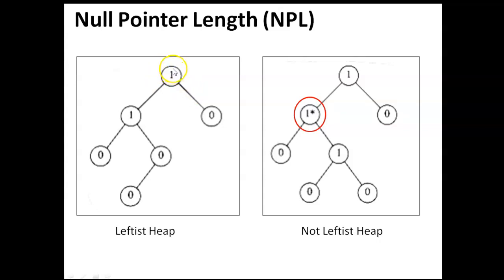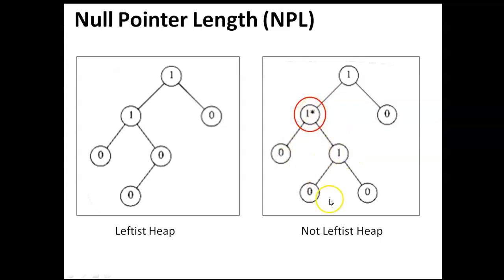How do we say it is a leftist heap? We have to check whether the left subtree of each node has a greater or equal NPL value compared to the right subtree. So this is the leftist heap. In the other heap, this node's right subtree has an NPL value greater than its left subtree, so this is not the leftist heap.